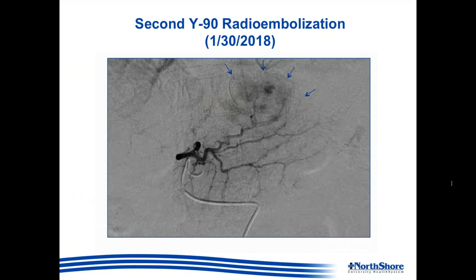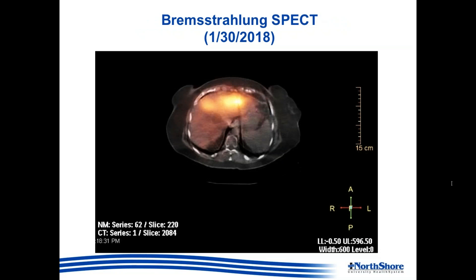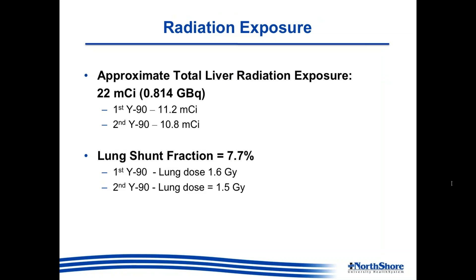This was confirmed again with bremsstrahlung SPECT imaging, and as you can see compared to the previous imaging, there was now successful targeting of the core of the tumor as opposed to just the margins. In total, the radiation exposure to the liver across both Y-90 radioembolization procedures came out to about 22 millicuries. On the technetium MAA testing done prior to Y-90, the lung shunt fraction was calculated at 7.7%. It was considered that there was successful embolization of the tumor based on the second bremsstrahlung SPECT imaging.